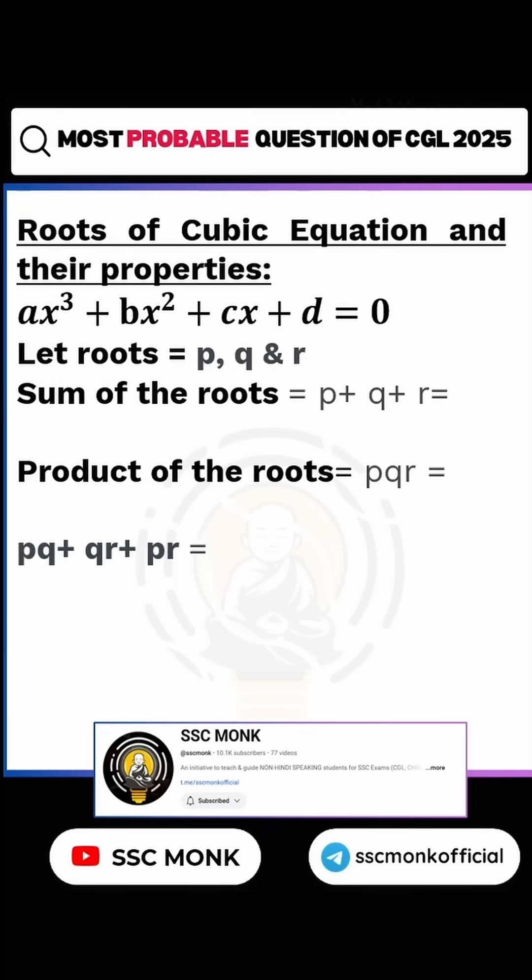But what about cubic equations? That was quadratic. This is cubic. If an equation is written like this: ax³ + bx² + cx + d = 0 and roots are p, q and r, what will be the sum of all the roots?